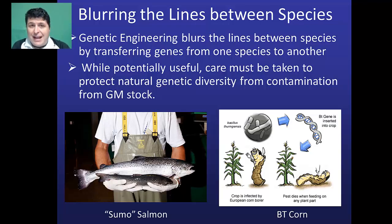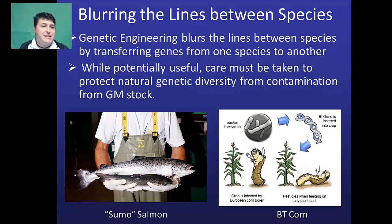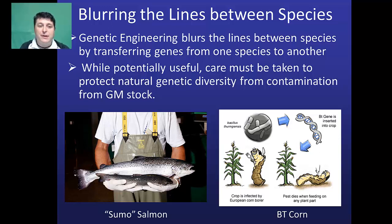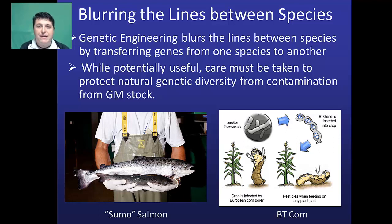With modern scientists in the 21st century, we're actually blurring the lines between species and speciation. What normally takes millions of years can now be done very quickly in a laboratory by taking genes from one organism and putting them into another. While potentially useful, we have to be careful to protect our natural genetic diversity from contamination, because we're changing in very rapidly what nature meant to take millions of years, and we don't know how that will impact the future genetic diversity of our organisms.